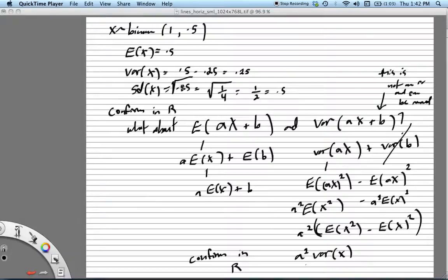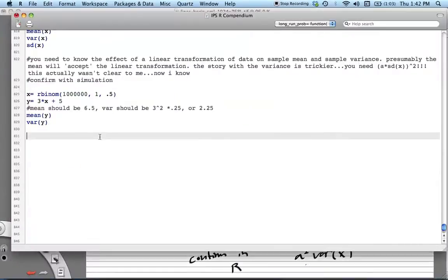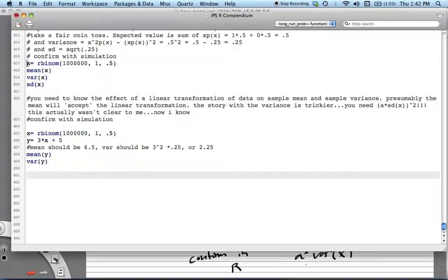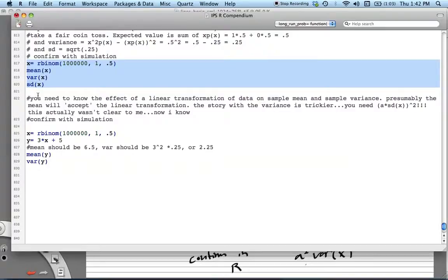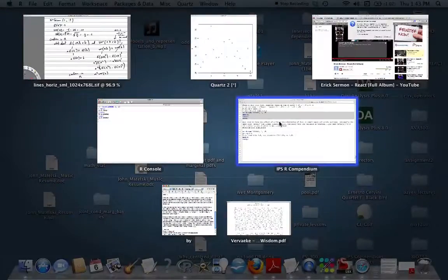We can go into R and confirm that much is true. We'll take a million of these random variables and get the mean and standard deviation. We get something that's close enough to what we wanted, so we're not concerned that our math was wrong.